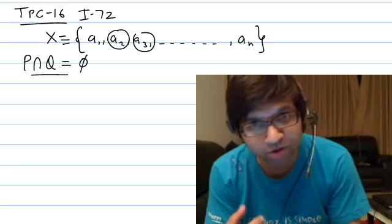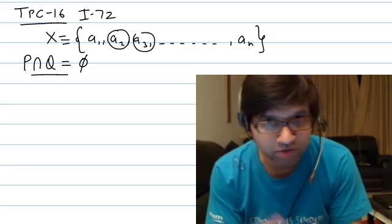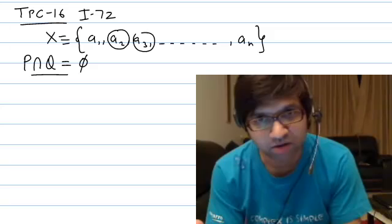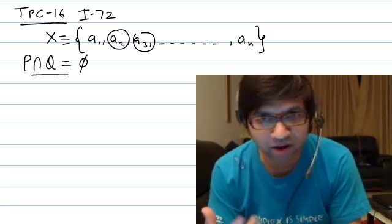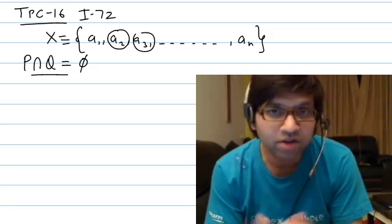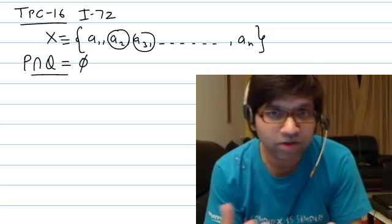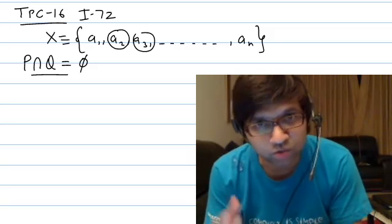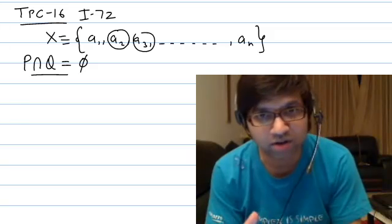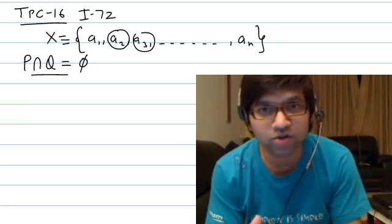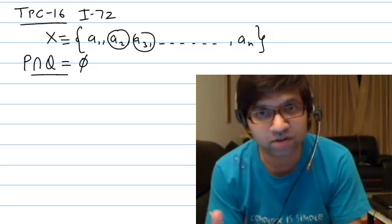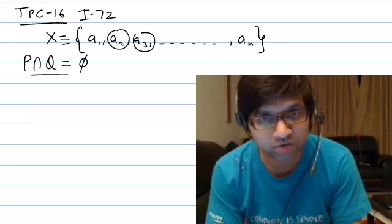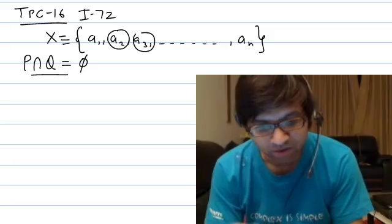Because we are forming Q by replacing the elements of P, they can have common elements. The question is: in how many ways can we form subsets P and Q such that the two subsets are disjoint — that is, P intersection Q is the empty set, with no common element in P and Q.